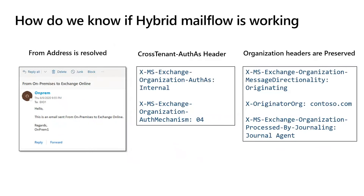Once you finish running the Hybrid Configuration Wizard, how do we know that all settings are properly configured? There are a few quick mail flow tests you can do to understand if Hybrid Mail Flow is working correctly. First, if you send a cross-premises email, the sender's name should be resolved to the display name. Also, the cross-tenant auth header should be set as internal. You should also be able to see various organization headers like message directionality, x-originating-org, or processed by journaling agent correctly set and preserved after the message traveled cross-premises.